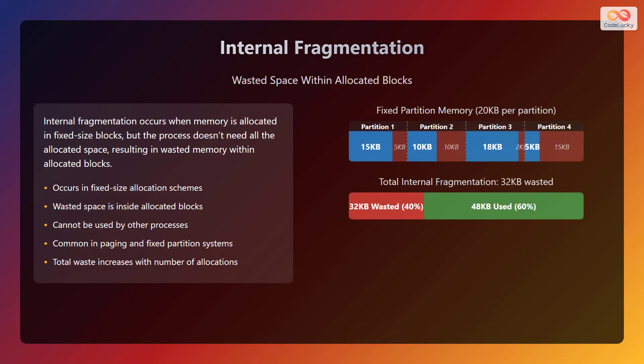Internal fragmentation occurs when memory is allocated in fixed size blocks, but the process doesn't need all the allocated space, resulting in wasted memory within allocated blocks. It occurs in fixed sized allocation schemes. The wasted space is inside the allocated blocks and it cannot be used by other processes. It is common in paging and fixed partition systems and the total waste increases with the number of allocations.